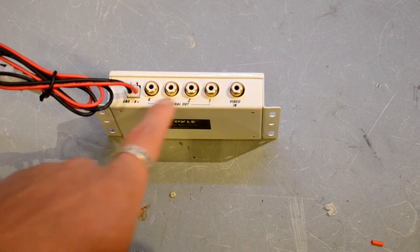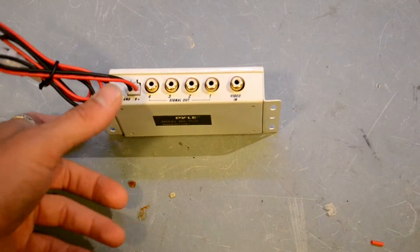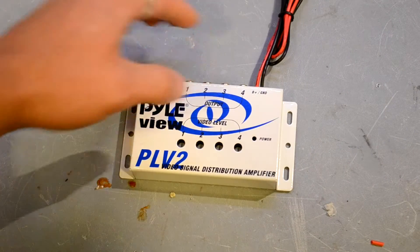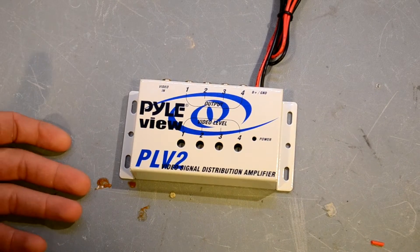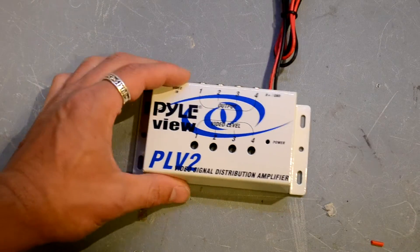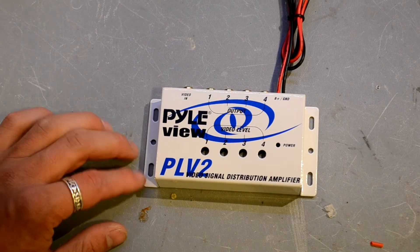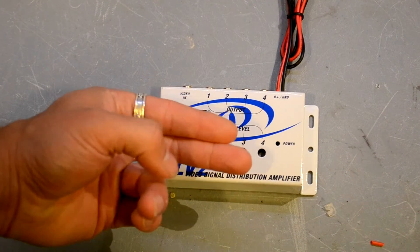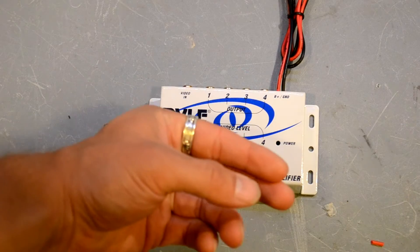And then you have four signal outputs. Now I know you're thinking, 'Wait a second, can't I just use a splitter?' You can, but what will happen when you use a splitter is that every time you split your video signal, you'll cut its quality in half.